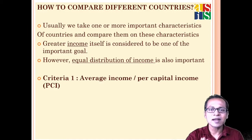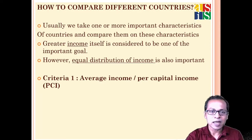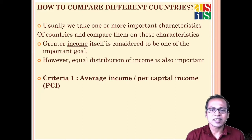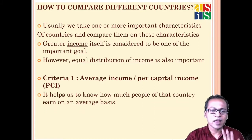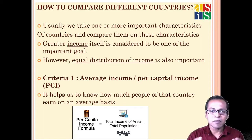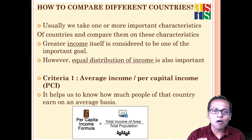The first criterion to compare countries is PCI — Per Capita Income. Per capita income means per person income. To calculate it: total income of the entire nation divided by total population gives you per capita income, that is, the average income — how much on average a person is earning in that country.